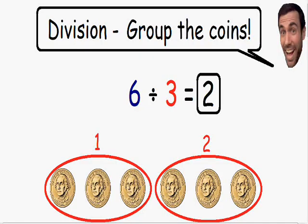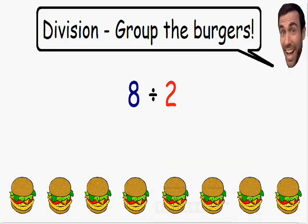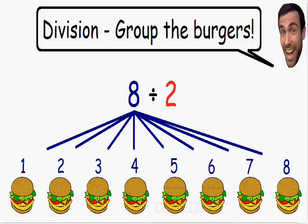Let's go over another example. Here in this example we have 8 divided by 2. So let's solve this by grouping the burgers. We're starting with the number 8, which is why we have 8 burgers.